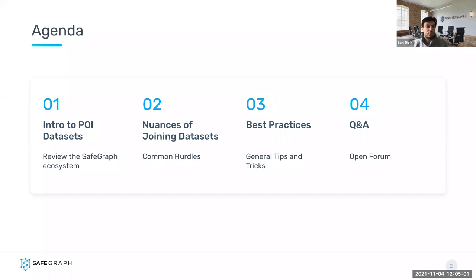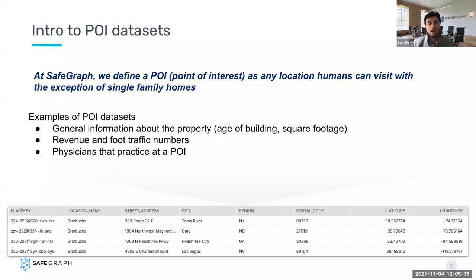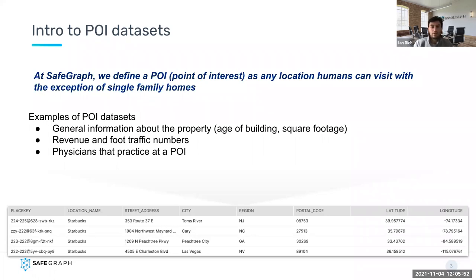Today I'll give a brief intro to SafeGraph and POI data sets, talk about the nuances and difficulties with joining POI data, share some best practices we use at SafeGraph, and then open up to Q&A. At SafeGraph we define a POI as any location humans can visit, with the exception of single family homes. A POI data set is a general term — any data set containing some combination of location name, address, postal code, latitude and longitude constitutes a POI data set.